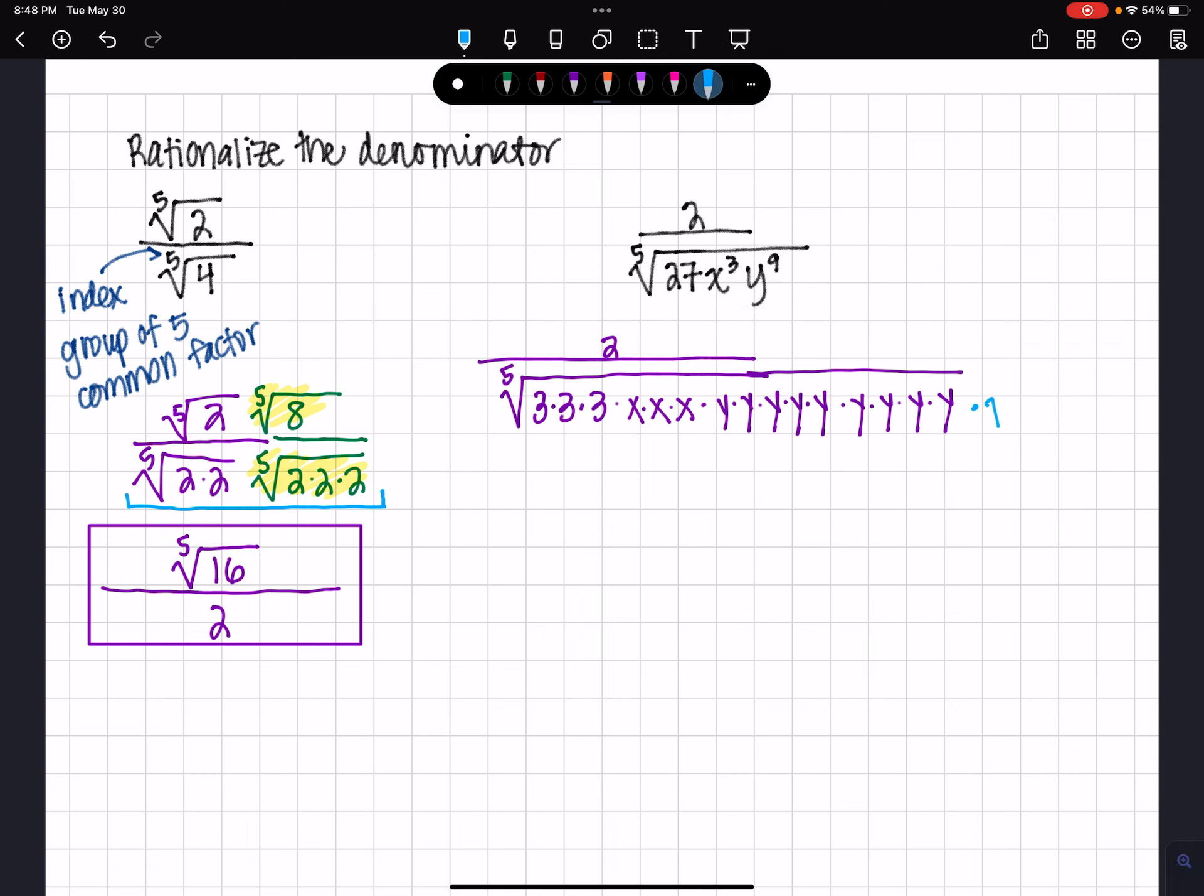It's going to need 2 more 3's. So it's going to need 3 times 3. So there's 2 more 3's. And it's going to need 2 more x's. So it's x squared or x times x.